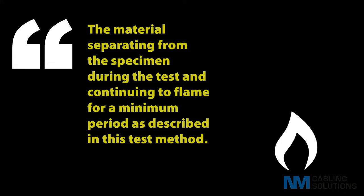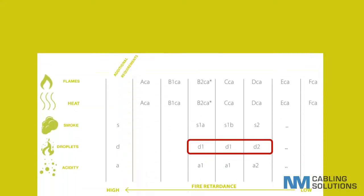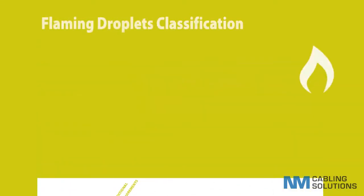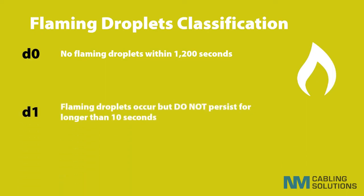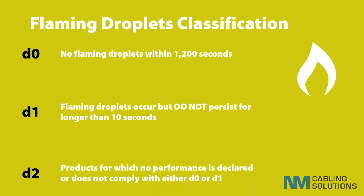For the classification, the following criteria applies: d0 is if no flaming droplets or particles occur within the 20 minutes — it must be noted that droplets are permitted, but they must not be alight as they fall. d1 is if no flaming droplets or particles persisting longer than 10 seconds occur within the 20 minutes.